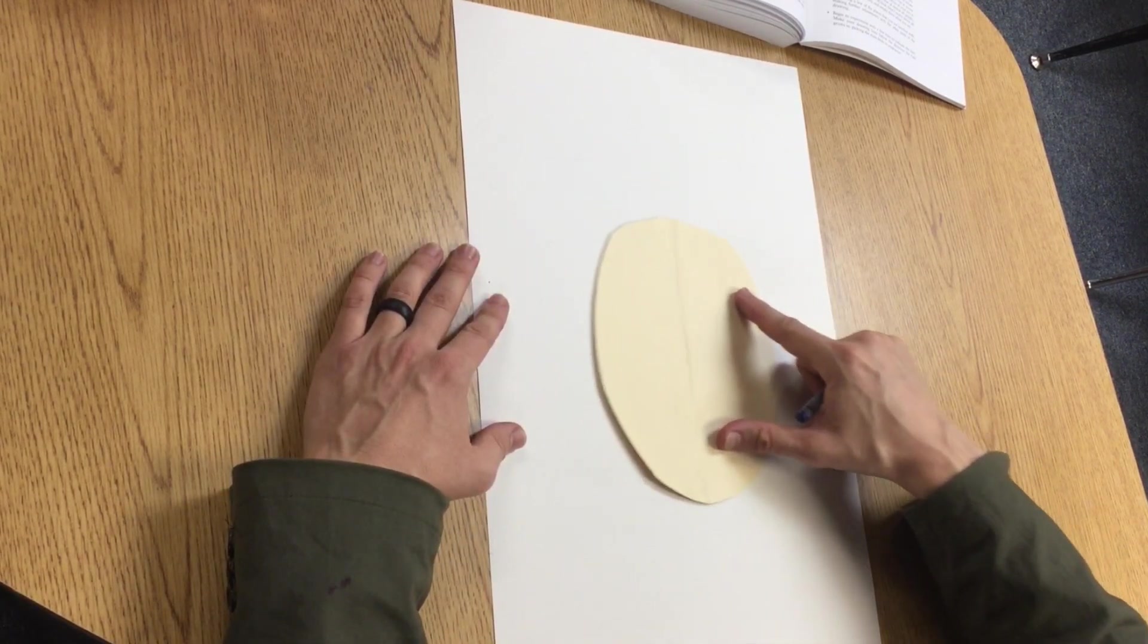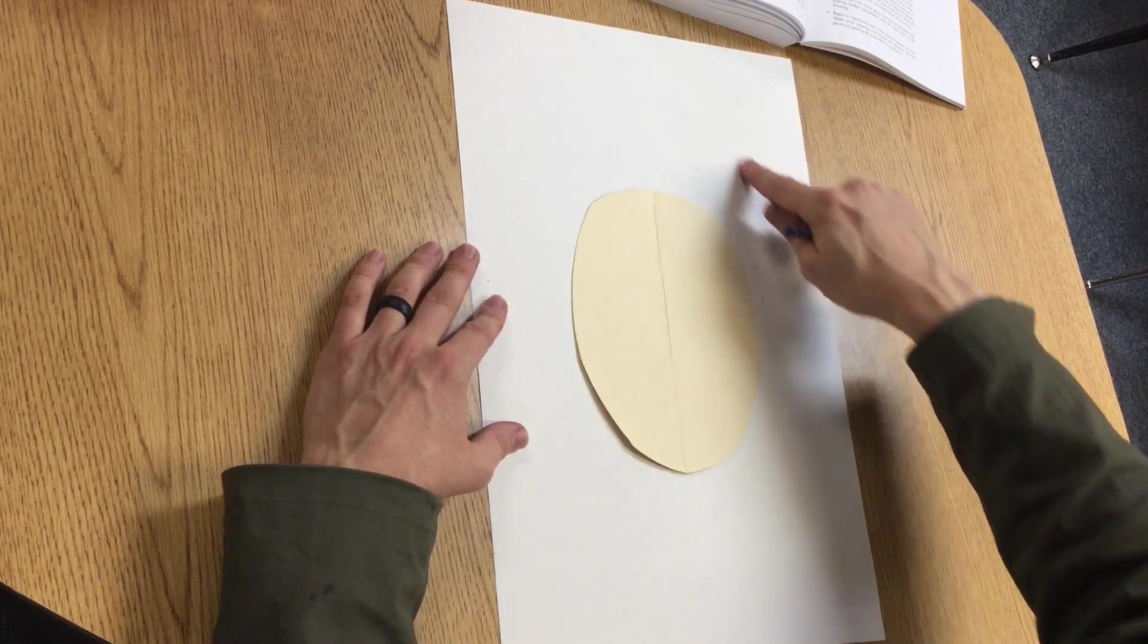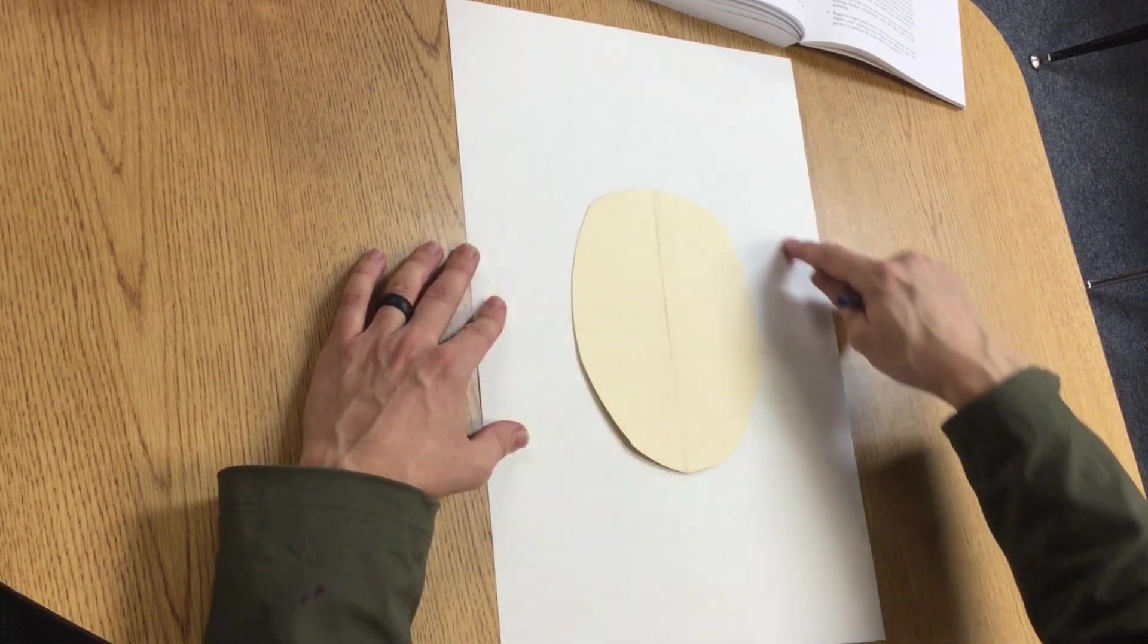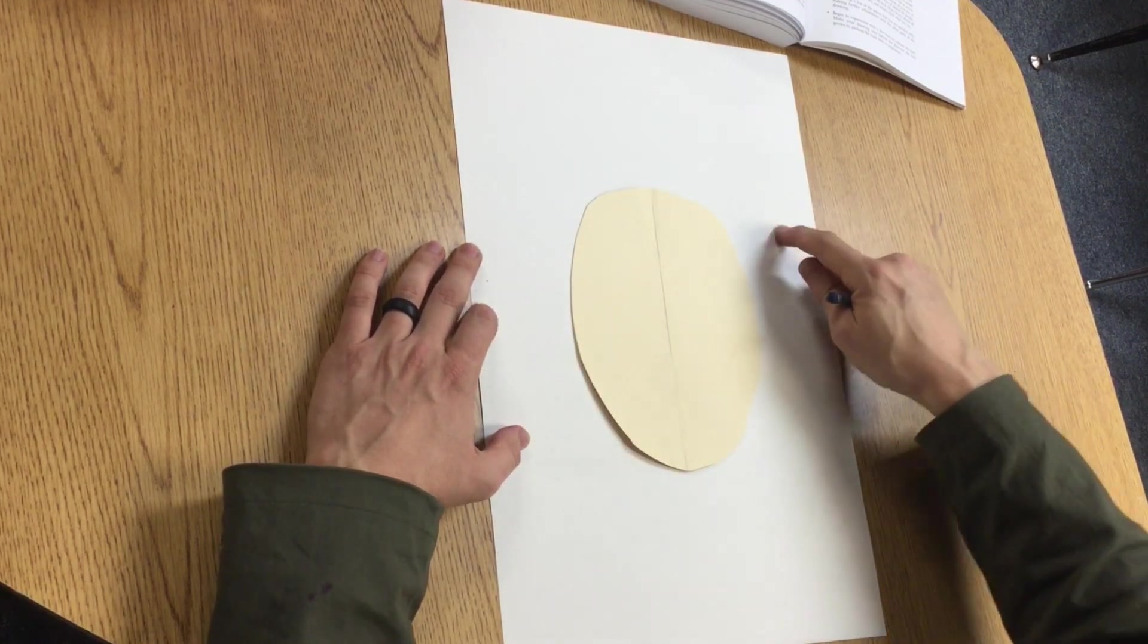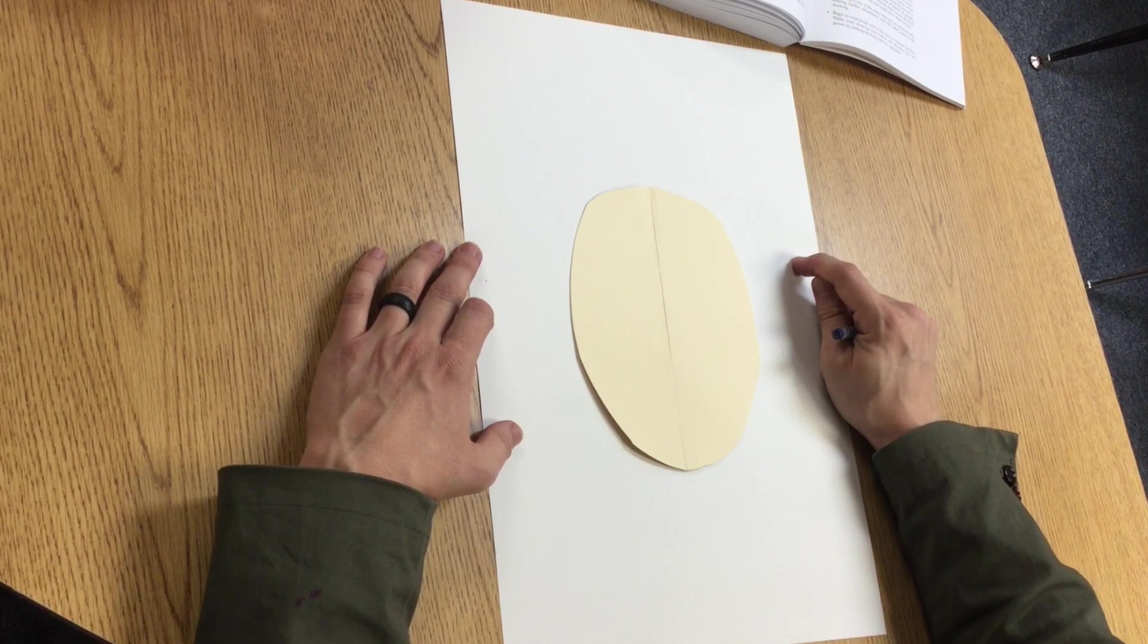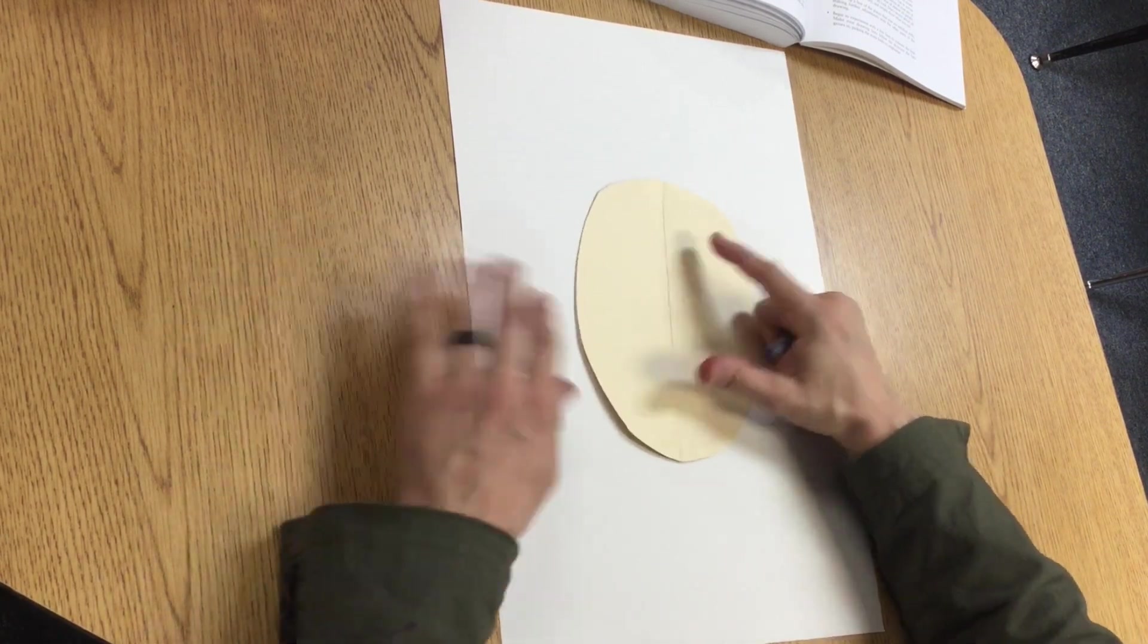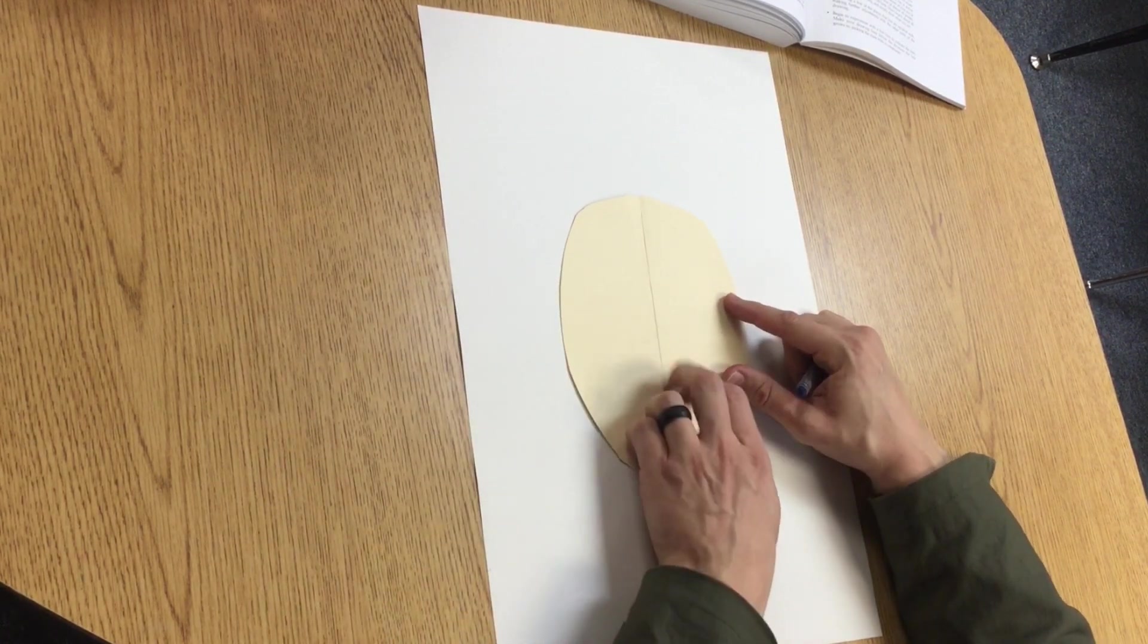I'm going to find a spot on my paper to put my head. I want to leave some room above my head for the background because in this project, second graders are going to do something for their background and third graders are going to do something different. But the face is going to start us out here and we're going to draw this oval.